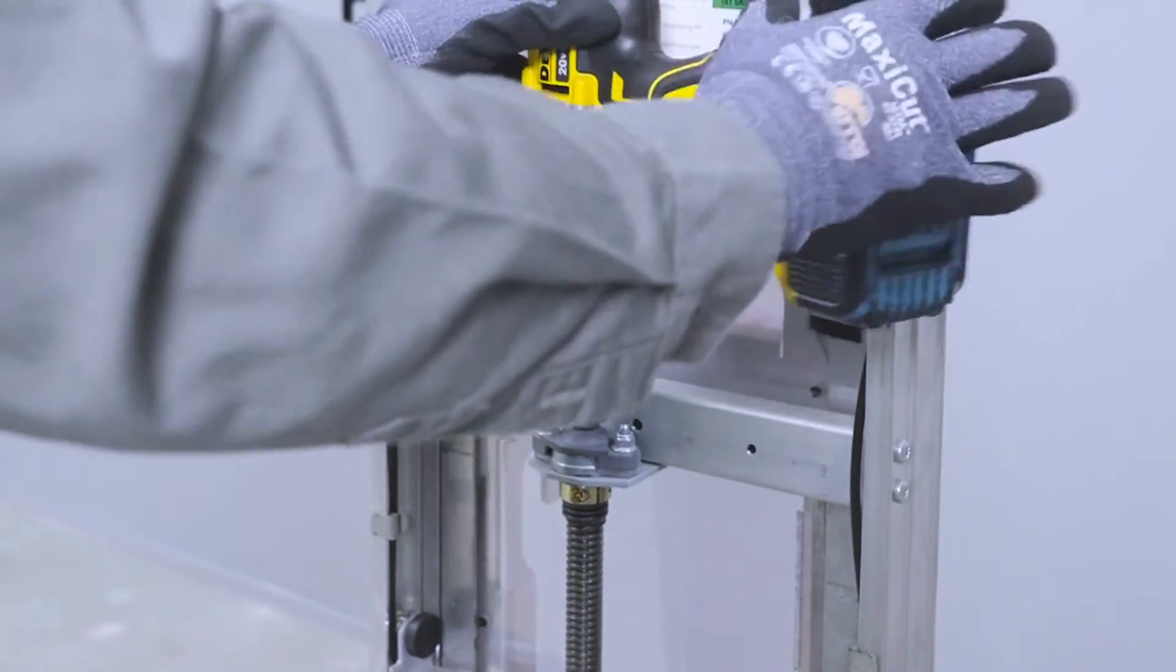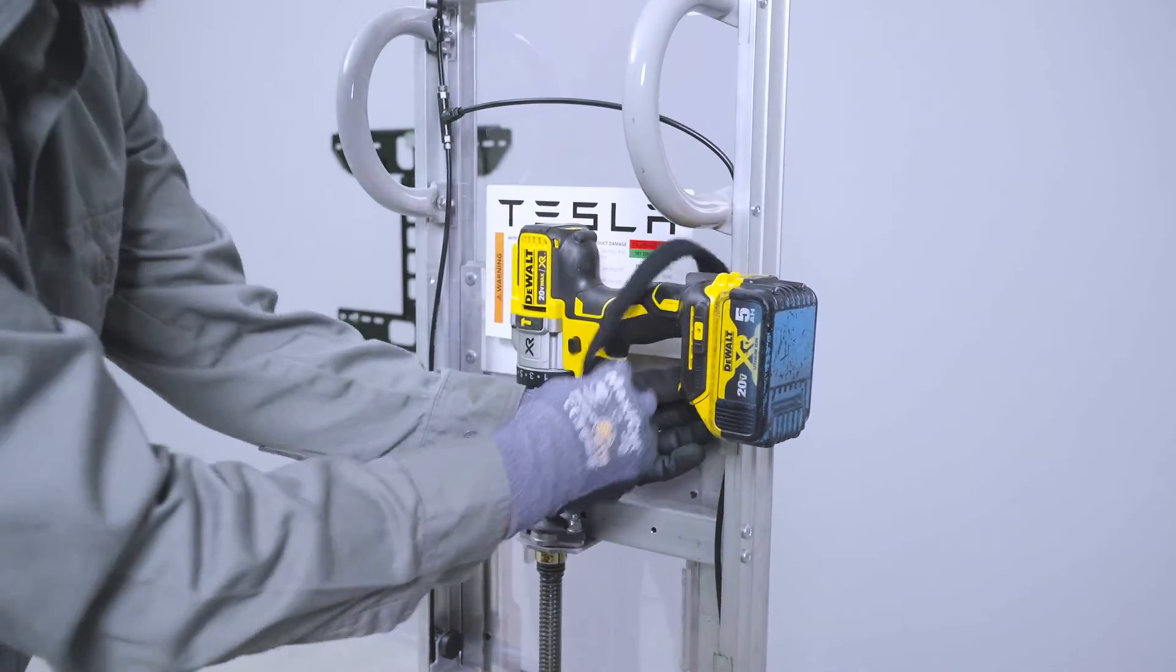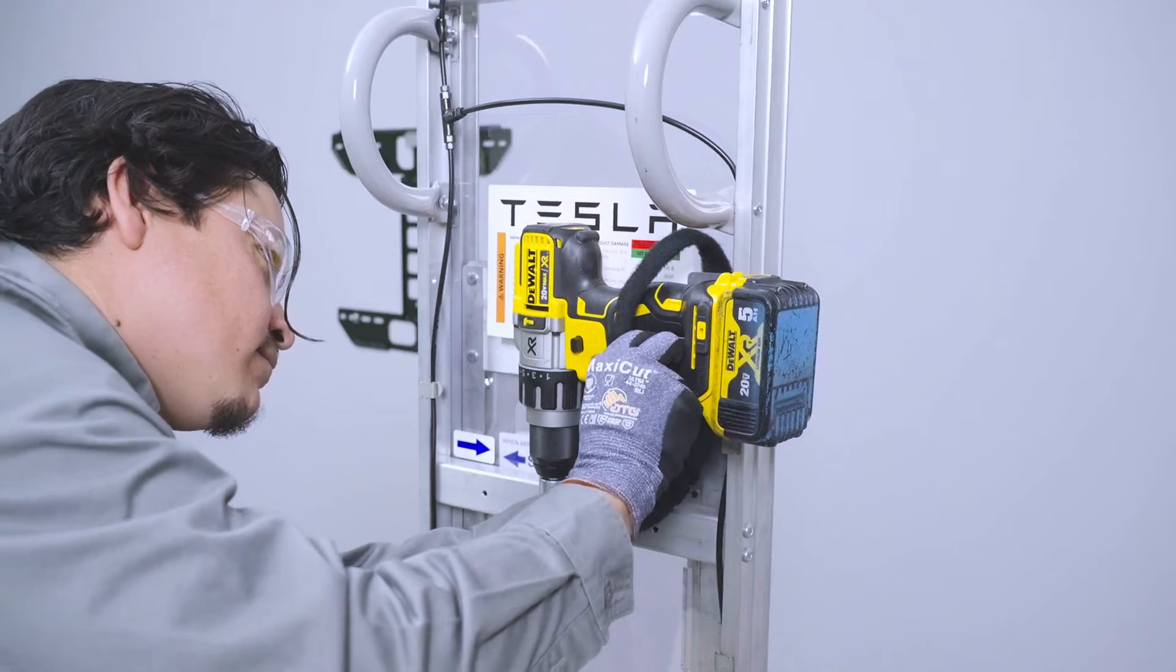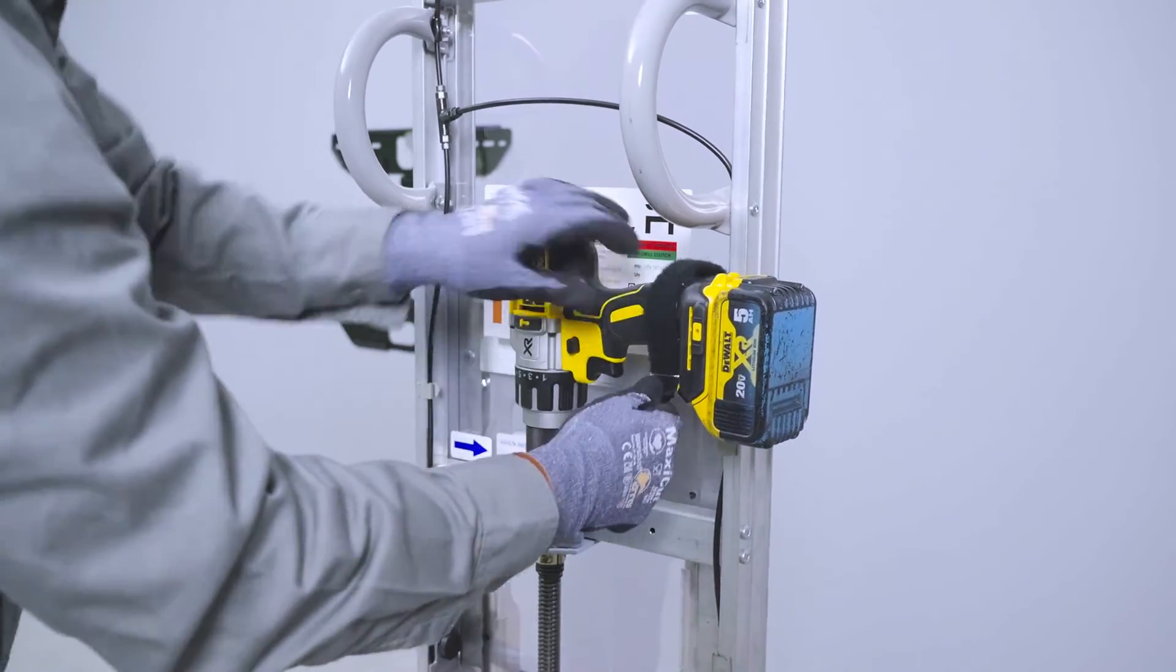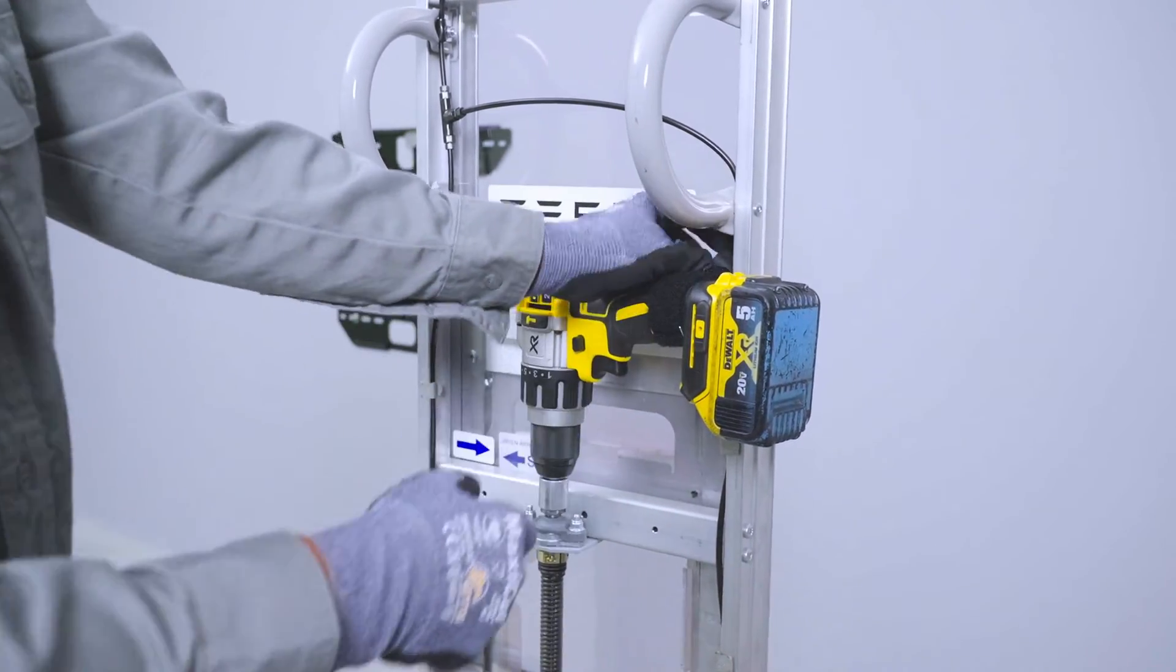Secure the drill and socket over the lifting screw and secure the drill to Powerwall Dolly with the included strap. Please note, failure to secure the drill may result in injury.